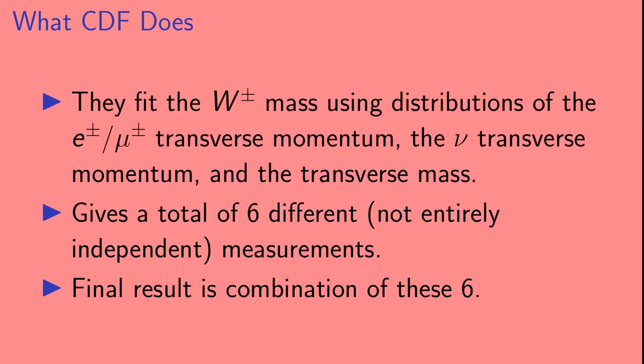CDF then fits the W mass using distributions of three quantities. The first is the electron or muon transverse momentum, which is the momentum in the direction away from the beam axis. The second is the neutrino transverse momentum, and the third is the transverse mass, which is a quantity built from the transverse momentum. This gives a total of six different measurements of the mass, although they are not totally independent of each other. CDF gets their final result by combining these six measurements.